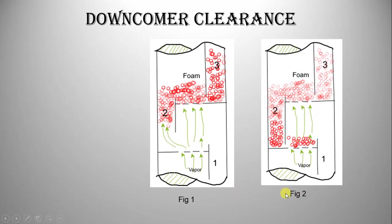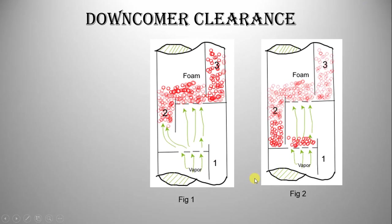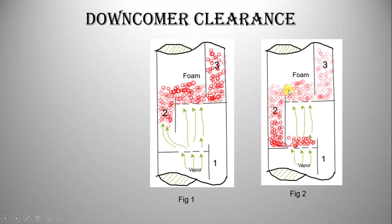On the other hand, referring to figure 2, the bottom edge of the downcomer is too close to the tray below. Observe the two figures: one with the downcomer too far from the tray below and the other too close. In figure 2, a high pressure drop is needed for the liquid to escape from downcomer 2 onto the tray deck, causing the tray above to flood. This process continues until all tray decks and downcomers above downcomer 2 are flooded.